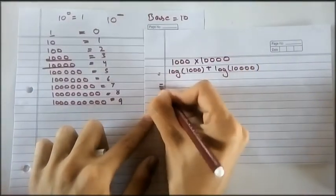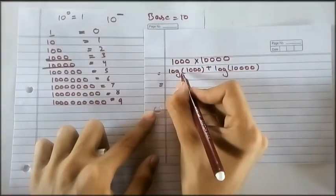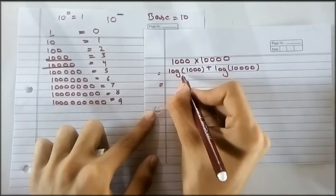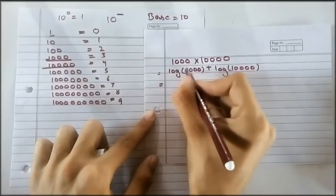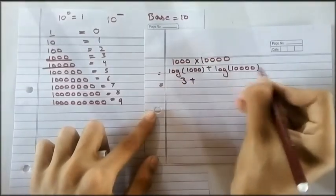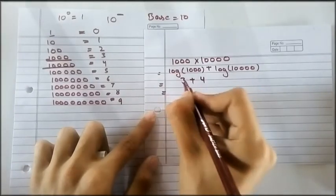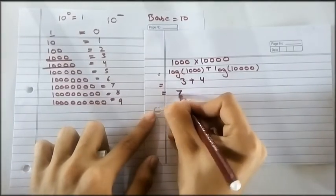So it's here. Now think, we will think for this, and for this we will use our logarithm table. Think, how much power will 10 have to get 1,000? You are right, 3. Now for this we will use the logarithm table. It's 4. Now 3 plus 4.